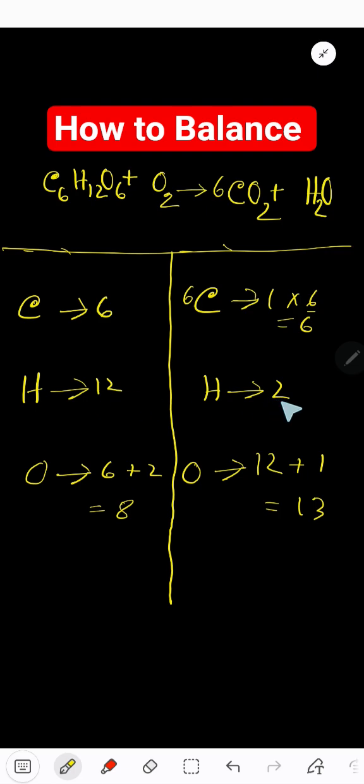Now balance hydrogen here, 12, here 2. To balance hydrogen, you need to multiply by 6, that gives you 12. If you multiply by something, that something must come before the atom. This hydrogen has come from here, so place here 6.